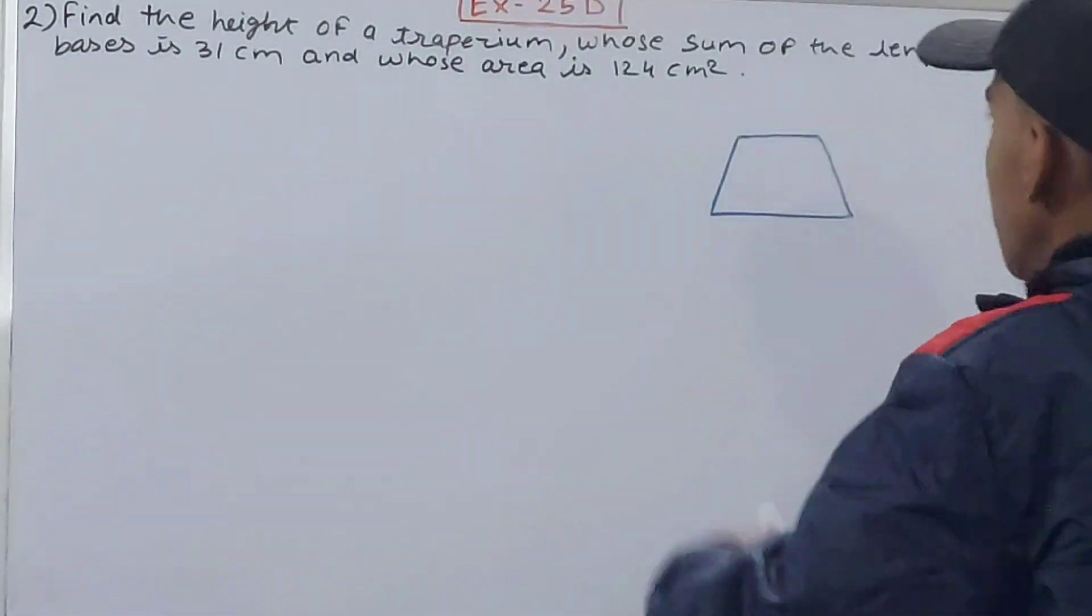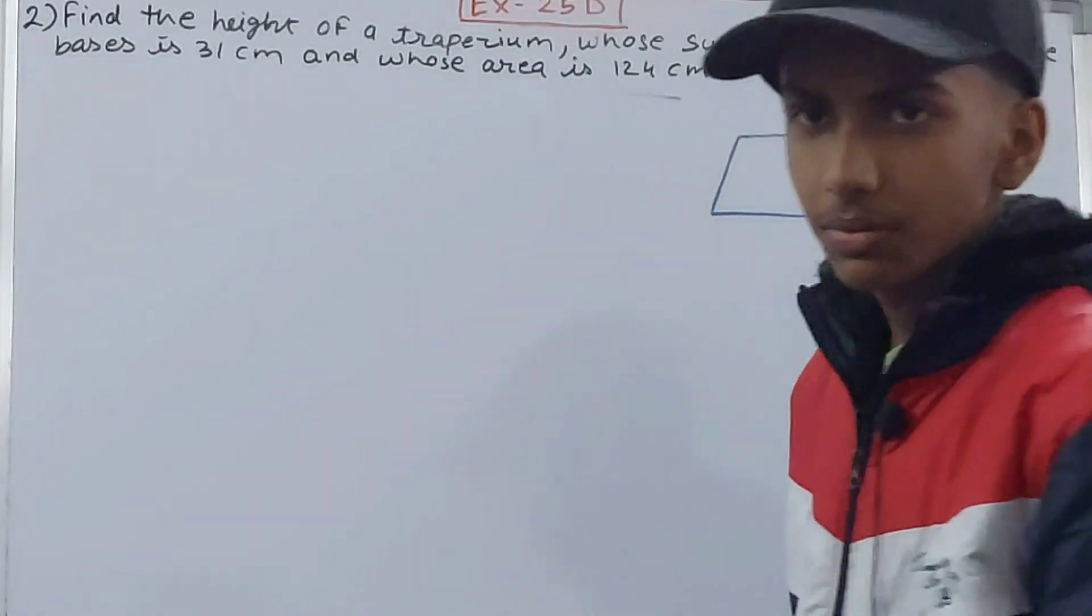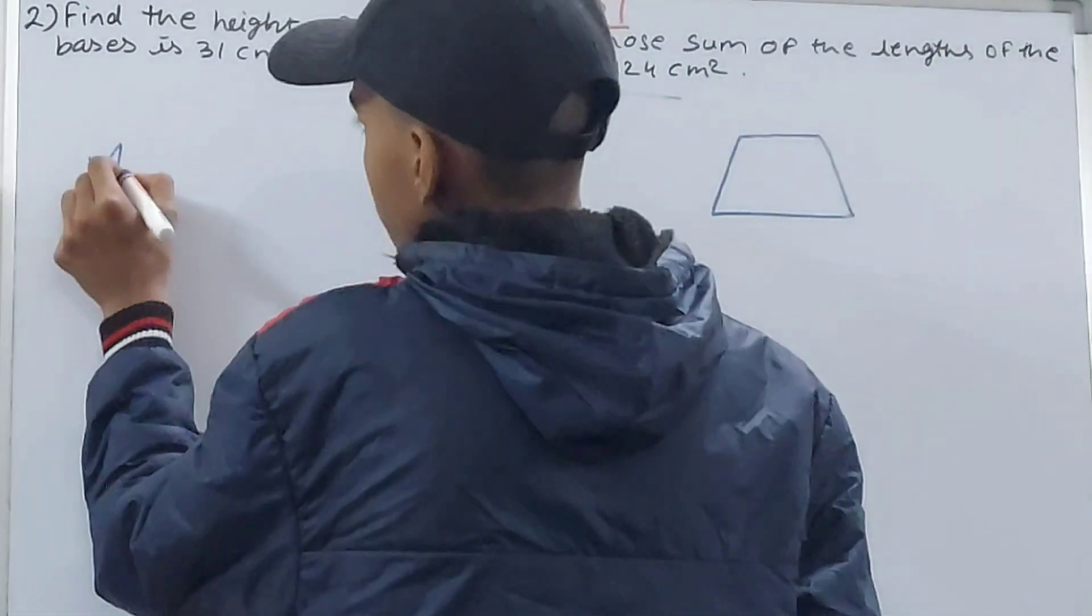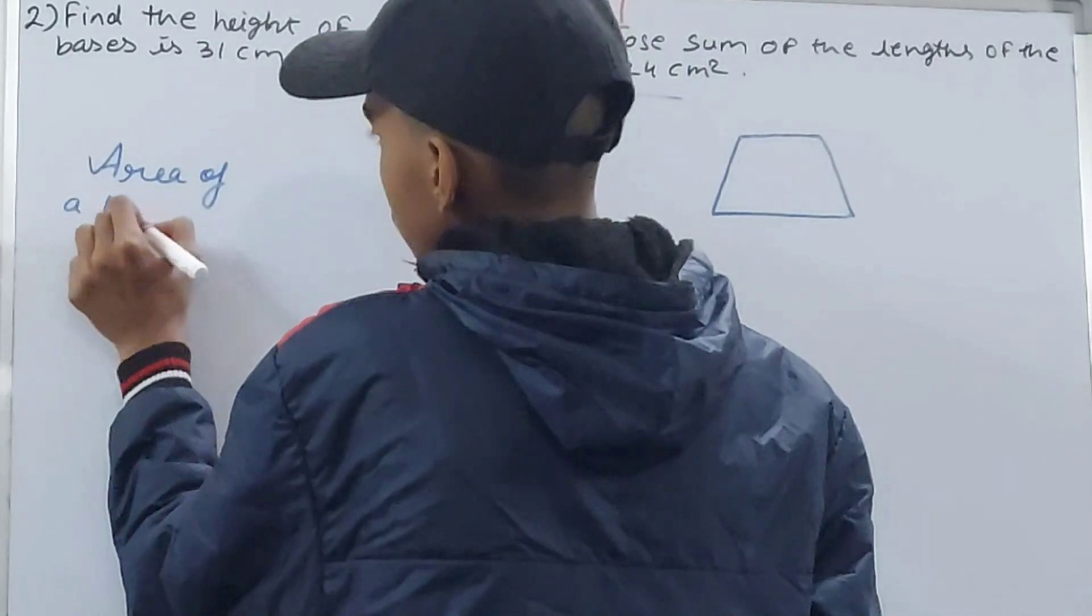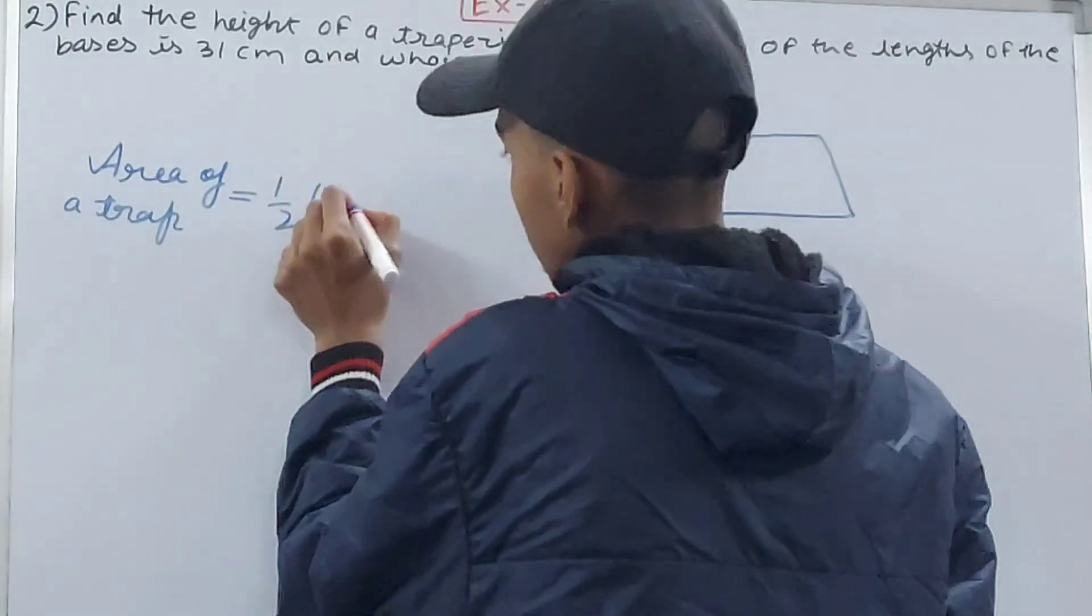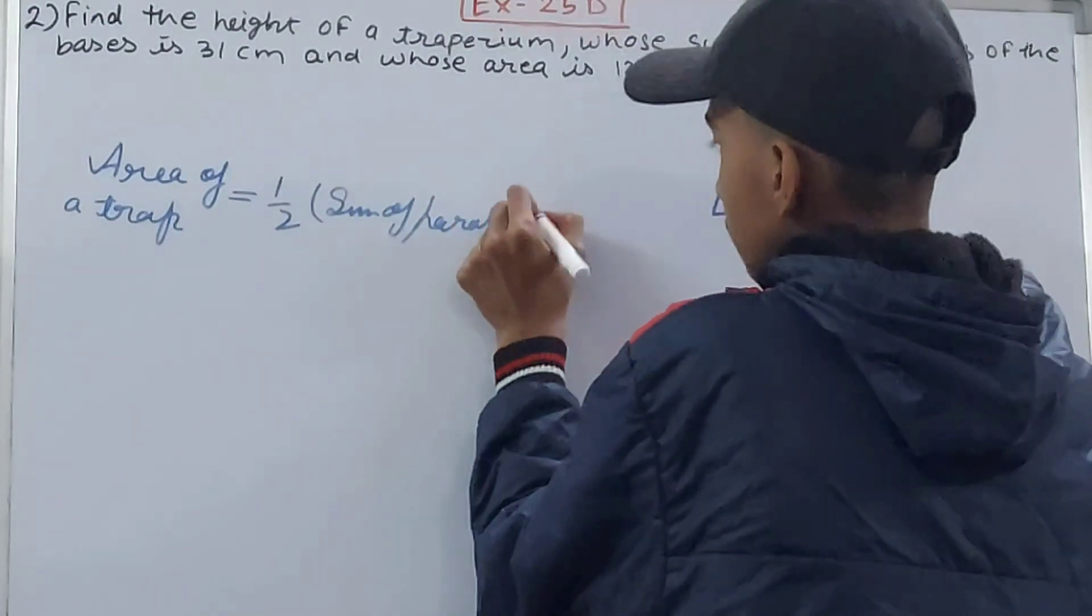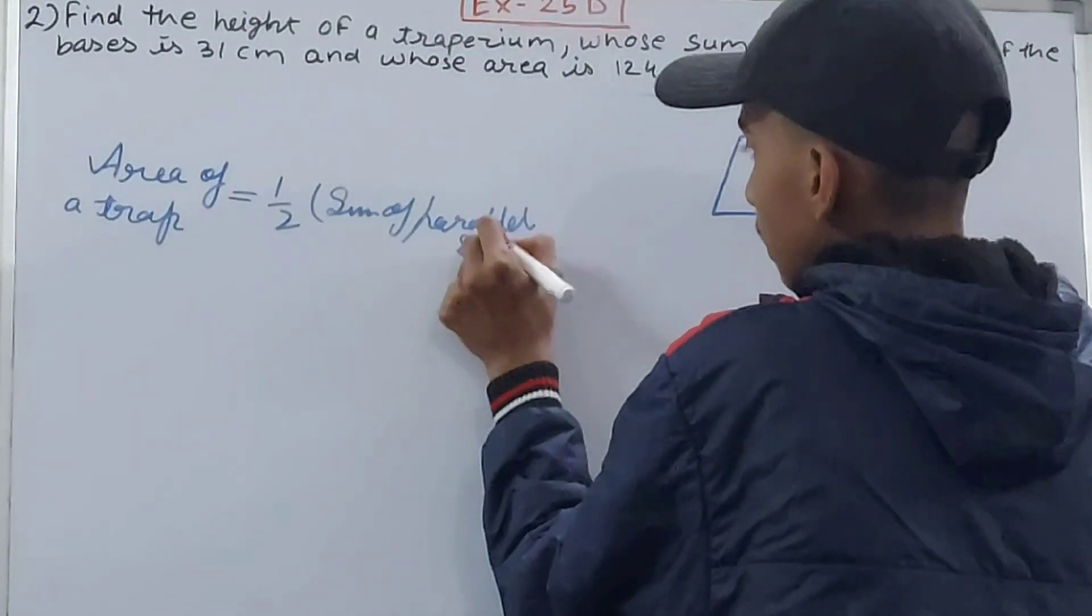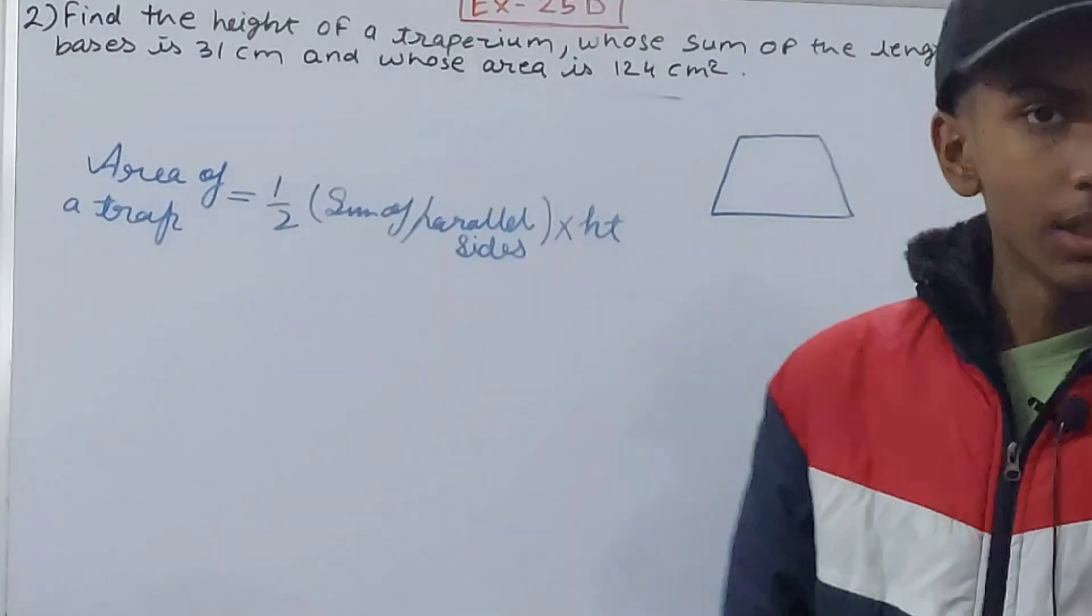the bases is 31 centimeters, and the height is not given. Only the area is given. So very simple: area of the trapezium is equal to 1/2 times the sum of parallel sides, multiplied by the height.